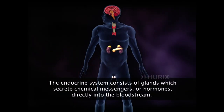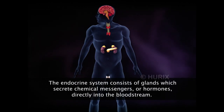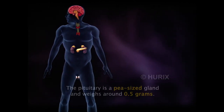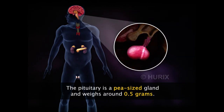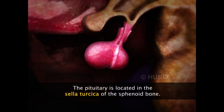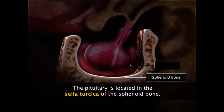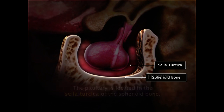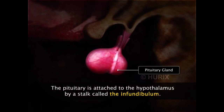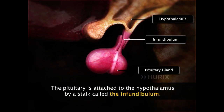These endocrine glands release chemical messengers or hormones that are released directly into the bloodstream. The pituitary gland is almost the size of a pea and its approximate weight is 0.5g. It is located in a depression of the sphenoid bone called the sella turcica. The pituitary is attached to the hypothalamus by a stalk called the infundibulum.